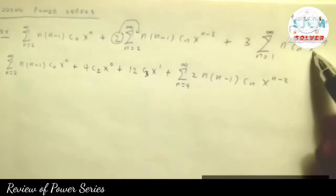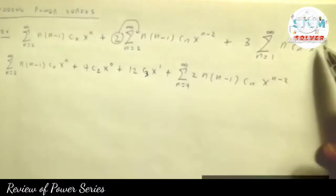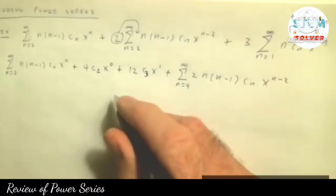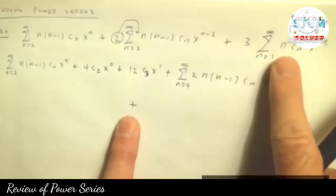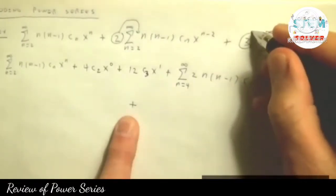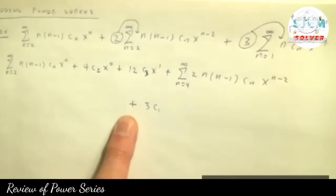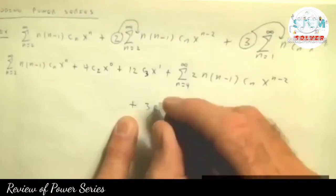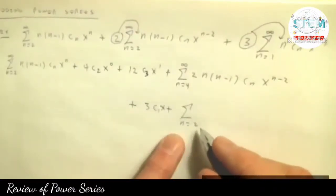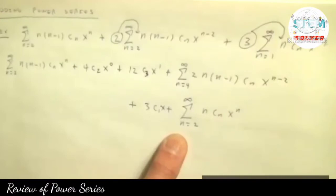The third series starts at x to the 1st, so again we need to get to x squared for all of them. This one needs to have one term run out. Plugging in n equal 1 — the 3 is out front, which I'll put on the inside from here on out. If I plug in 1, I get 3c₁x, plus a series now starting at 2 to infinity of cn x to the n.